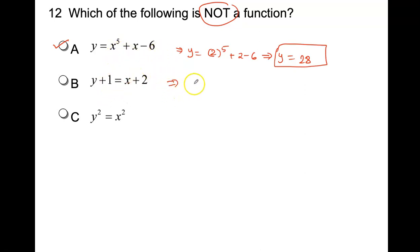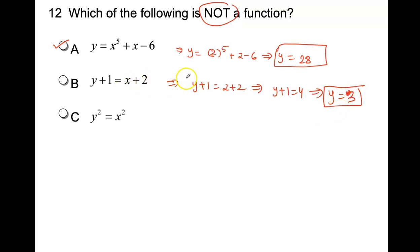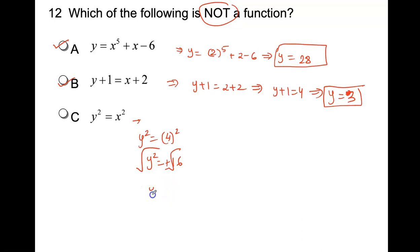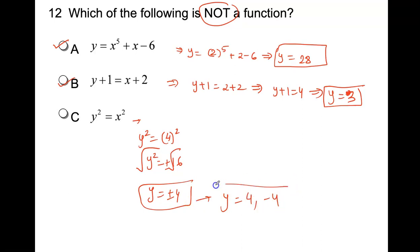For the last choice, y squared equals x squared, I pick x equal to 4. Then y squared equals 4 squared equals 16, and taking the radical on both sides gives y equals plus or minus 4. How many values of y? Two. So this is the correct choice — it is not a function.